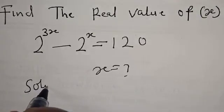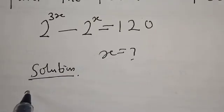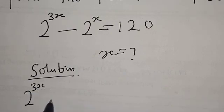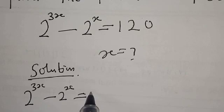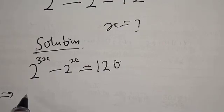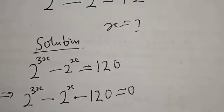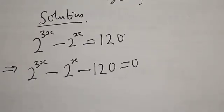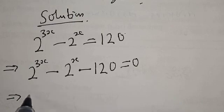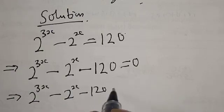Solution. We have 2 raised to power 3x minus 2 raised to power x is equal to 120. This implies that we have 2 raised to power 3x minus 2 raised to power x minus 120 is equal to 0.